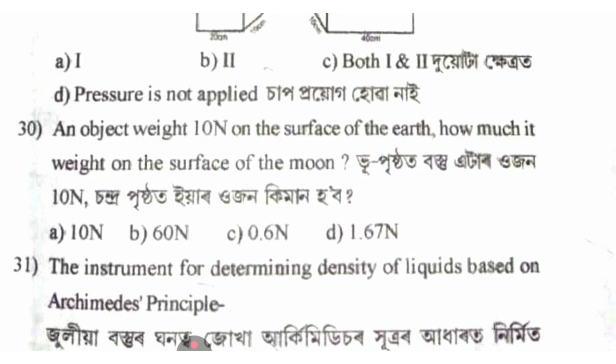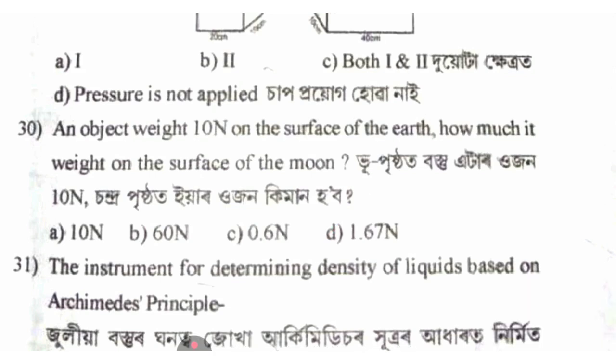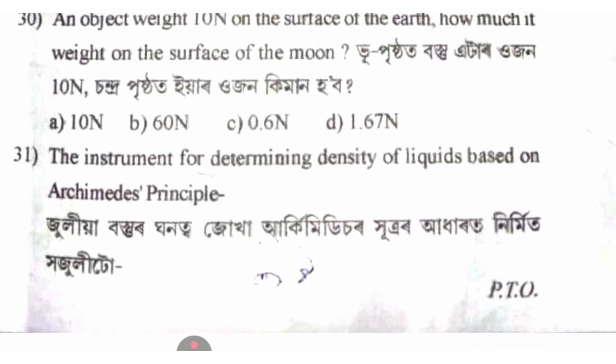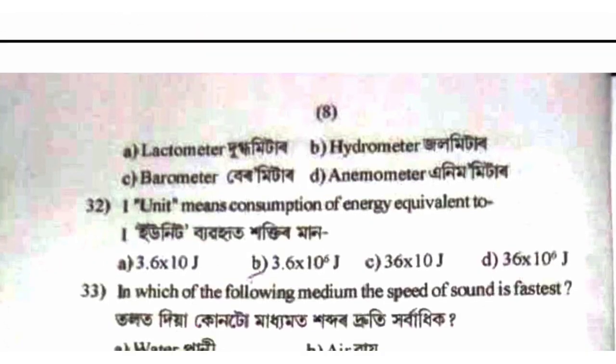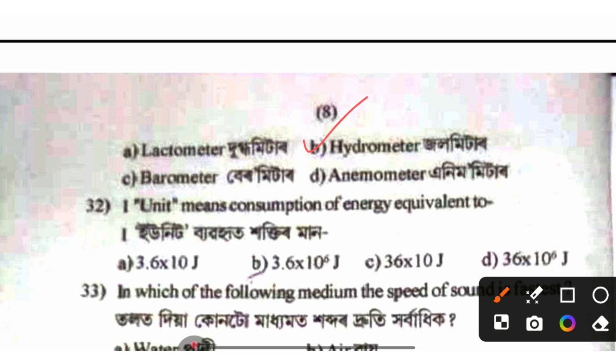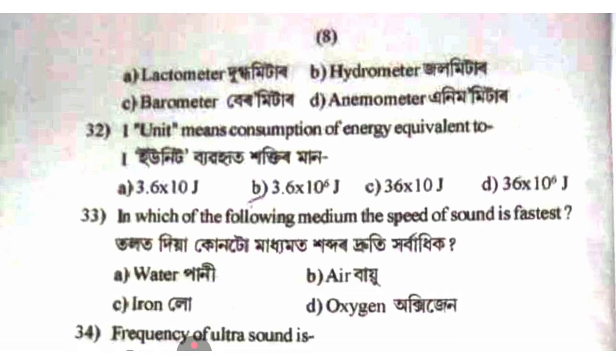The weight on the Moon is approximately 1.67 Newtons, option D. An instrument used to measure density is a hydrometer, option B.